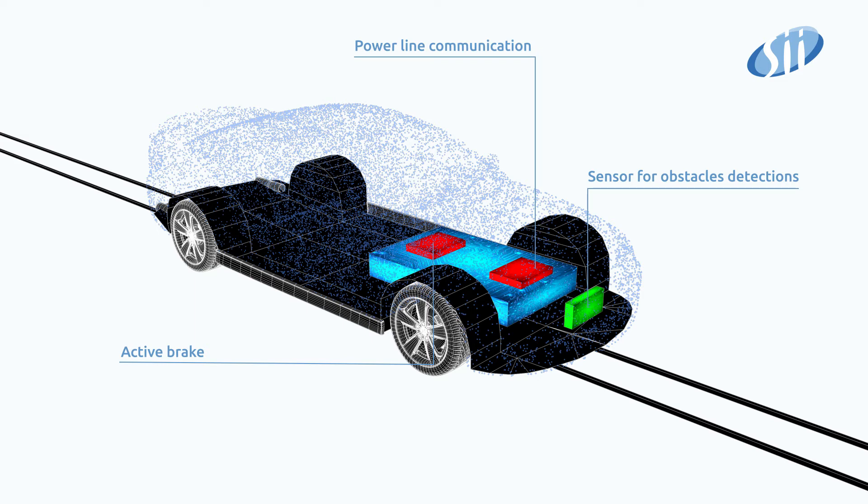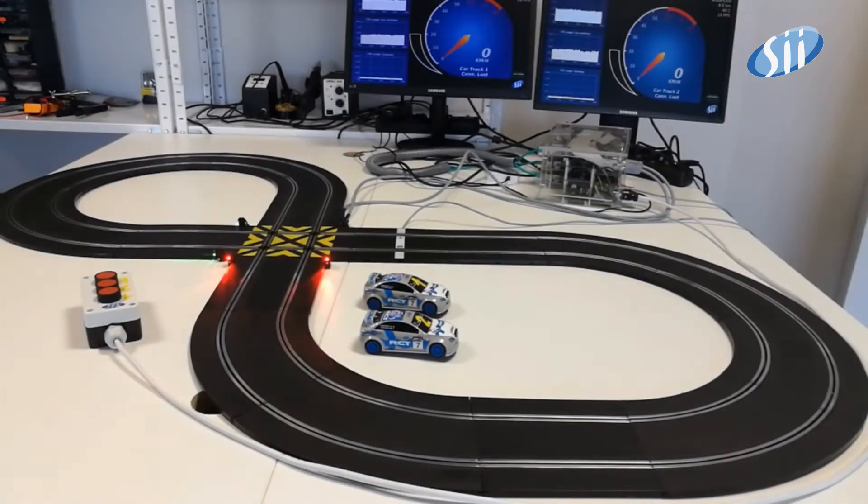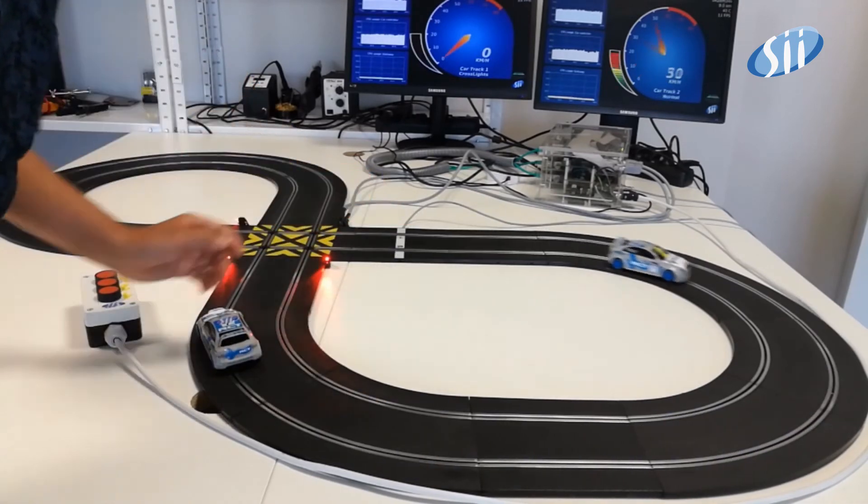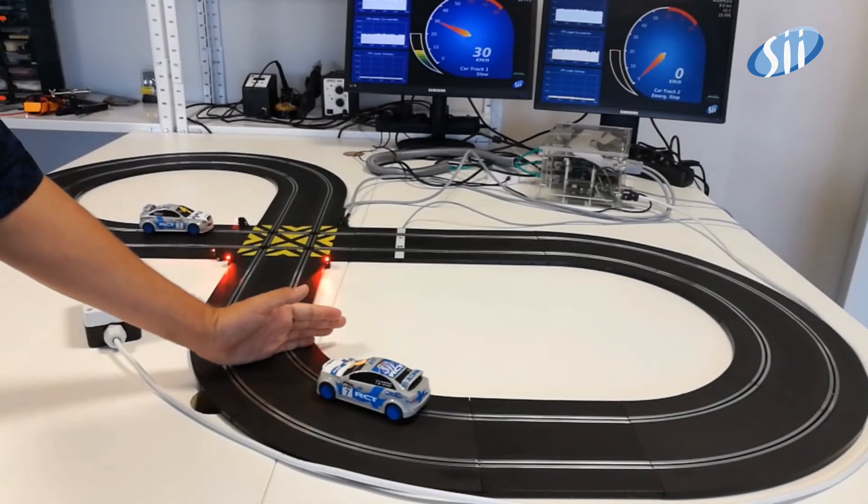Each car has a unique ID used for communication. It reacts to any obstacle found on track. If a danger situation occurs, with help of car-to-car communication, the speed of the other car is reduced, demonstrating safety.